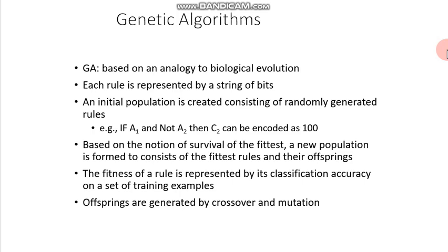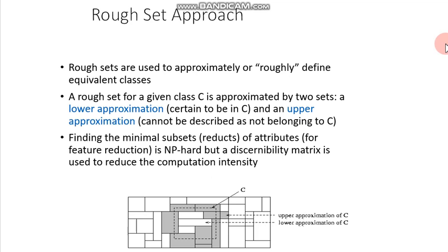Offspring are generated by crossover and mutation. In genetic algorithms there are two operators: crossover, which generates two offspring from two parent chromosomes, and mutation, which mutates a particular bit of a chromosome in order to observe changes.